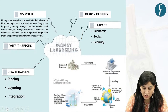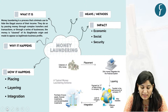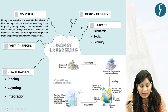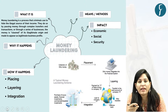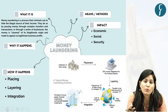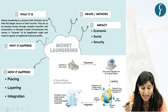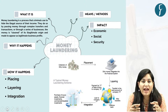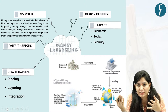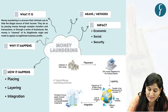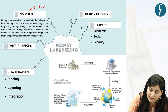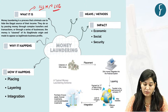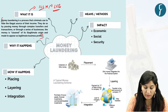So let's start our discussion with the term: what is money laundering? Money laundering is a process used by criminals to hide the illegal source of their money by passing money through complex transactions and a series of business activities. The ultimate aim is that money is cleaned of its illegitimate origin and made to appear as legitimate business profit. In crux, it is a process to convert illegitimate money into a legitimate one.